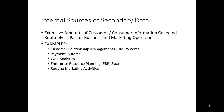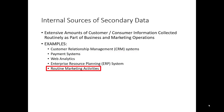A lot of secondary data used by marketers can actually come from internal sources to the organization. Business and marketing operations routinely collect a lot of information that can be used to answer a current marketing research question. Let's walk through a few examples of internal sources that generate data often relevant to marketing researchers: CRM systems, payment systems, web analytics systems, ERP systems, and other routine marketing activities. This list isn't exhaustive, but it does illustrate the many ways that modern organizations generate relevant data for marketing research.